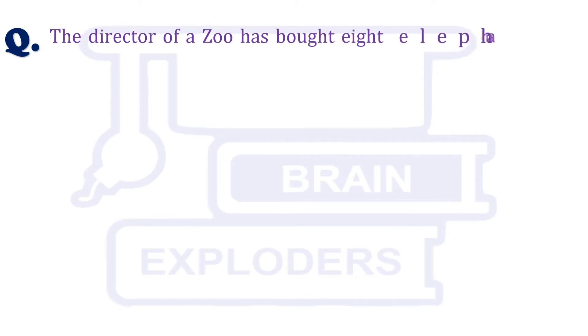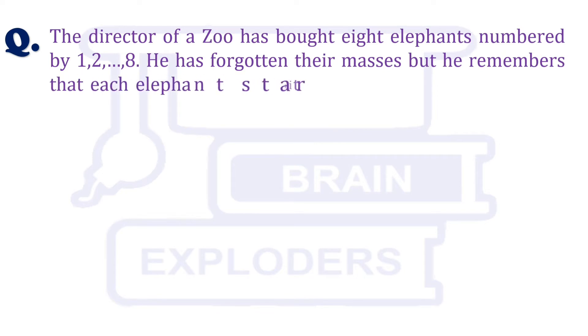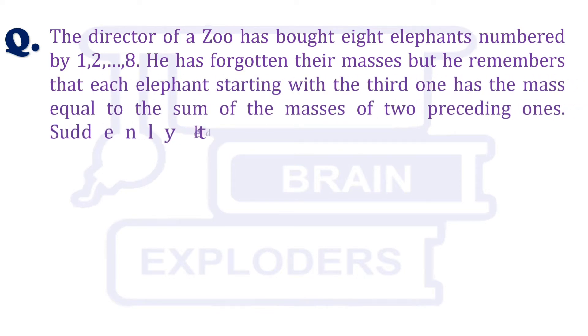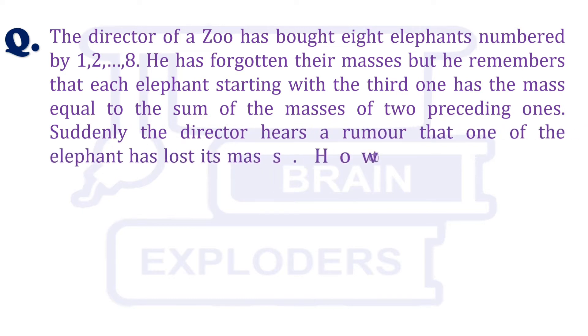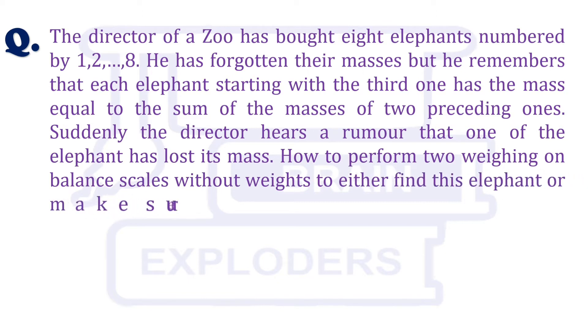The director of a zoo has bought 8 elephants numbered by 1, 2, 3 and so on. He has forgotten their masses but he remembers that each elephant starting with the third one has the mass equal to the sum of the masses of two preceding ones.